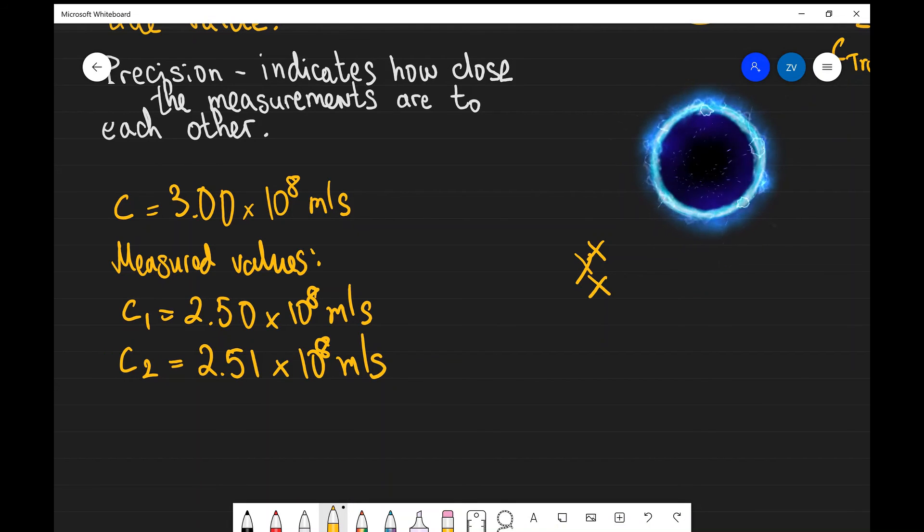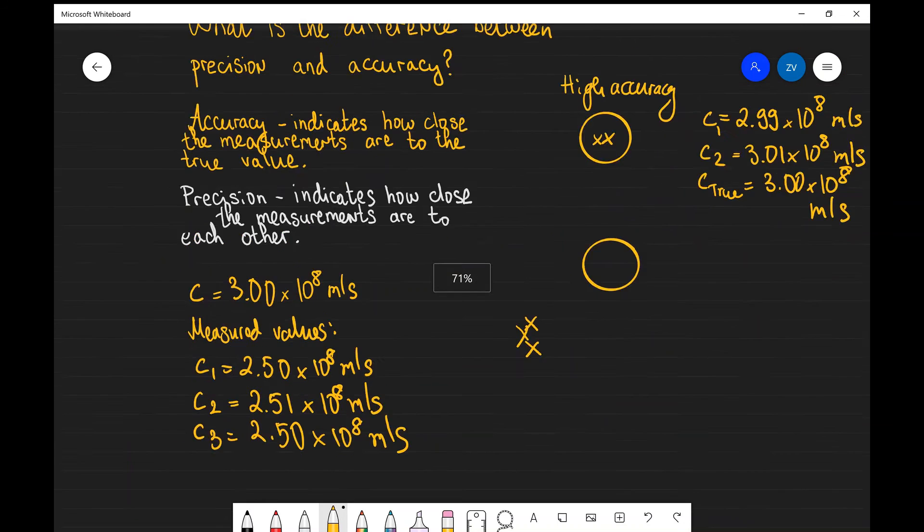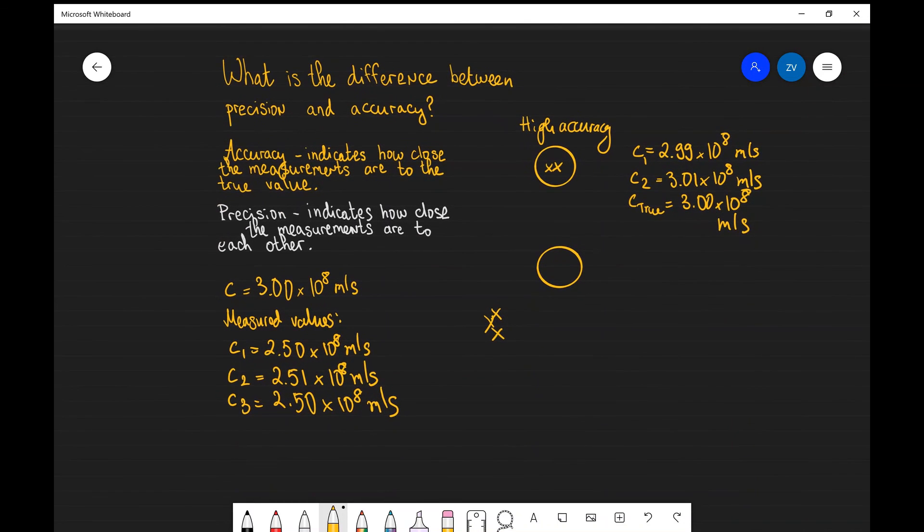And our third measurement was exactly the same as the first one, 2.50 × 10^8 meters per second. So this is an example of an experiment which is quite precise but not accurate because the measured values are not close to the real value.